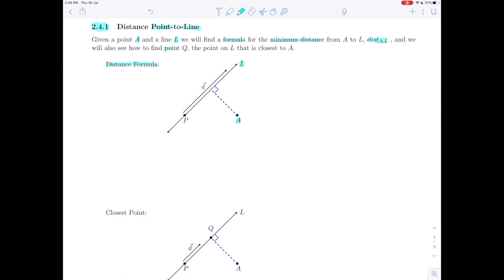So we're going to find a distance formula, and then secondly, we're also going to see how we might find a point Q, which is here, and that is going to be the point on L that is closest to our given point A, so our closest point.